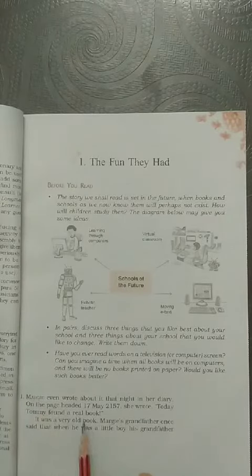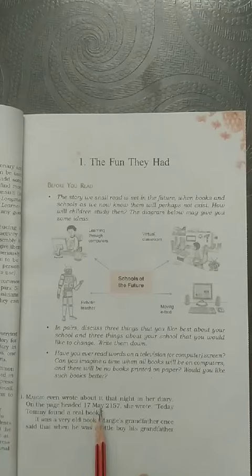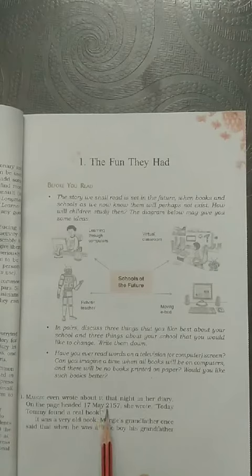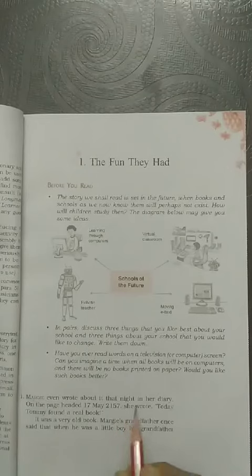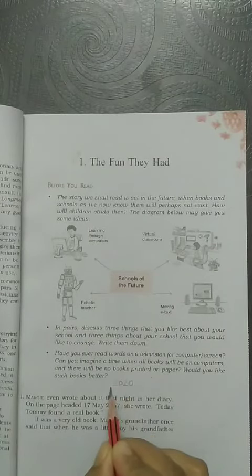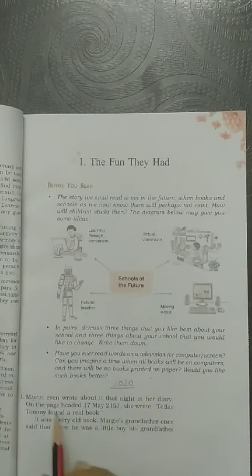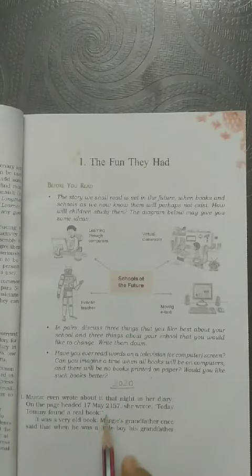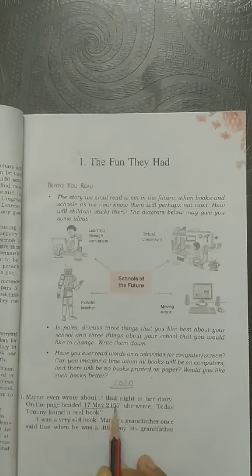He wrote his diary on 17th May 2157. Means, today, our year is 2020. Okay? But Margi, who wrote this diary on 17th May 2000...